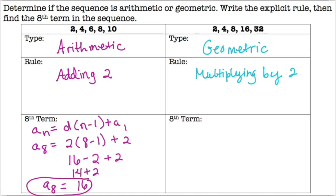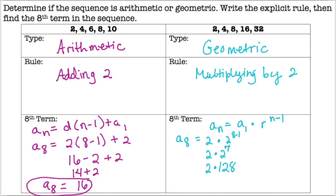For the eighth term on the geometric side, we use the formula: a-sub-n equals a-sub-1 times r raised to the (n minus 1) power. A-sub-1 is 2, r is 2, and we're looking for the eighth term, so we do 2 raised to the 7th power, which is 128, times the 2 in the front, giving 256 as our answer.